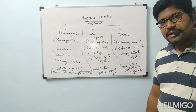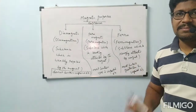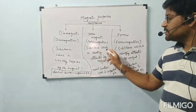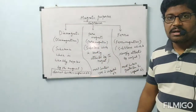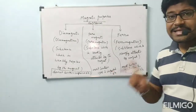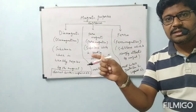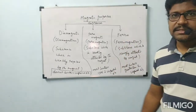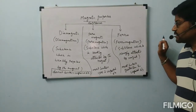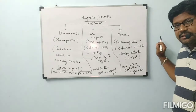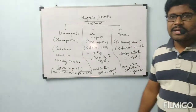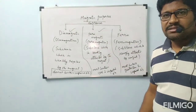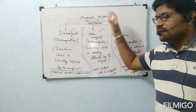Diamagnetic substances are weakly repelled by the magnet and do not contain unpaired electrons. Paramagnetic substances are weakly attracted by the magnet, contain one or two unpaired electrons, and that property is called paramagnetism. Ferromagnetic substances are strongly attracted by the magnet and contain more than 2 unpaired electrons. Examples will be covered in molecular orbital theory.